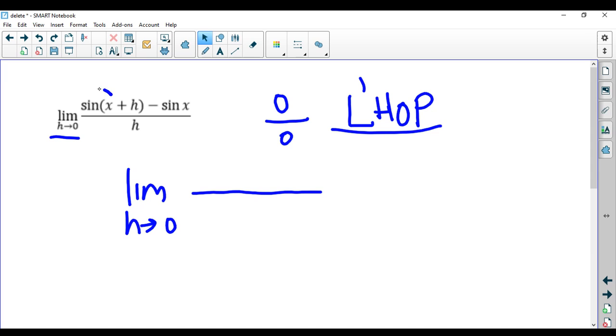So now the derivative of sine of x plus h, you're going to use the chain rule here. And remember, h is the variable now, and x is constant. So the derivative of the outside is cosine. Leave the inside alone.